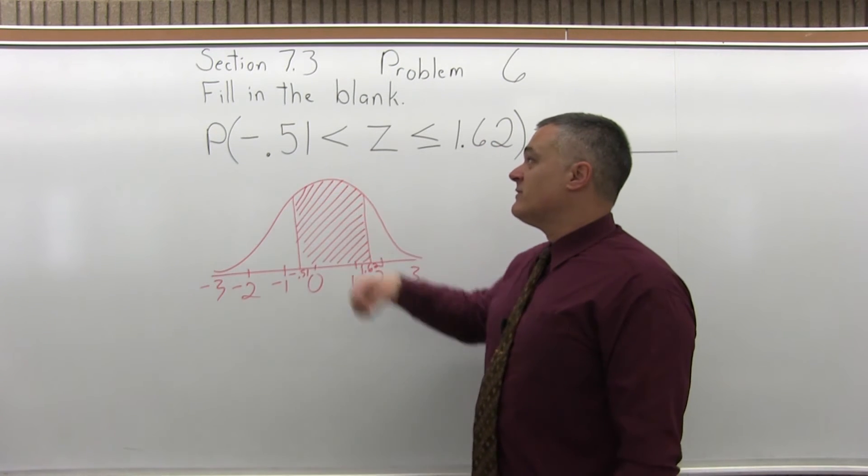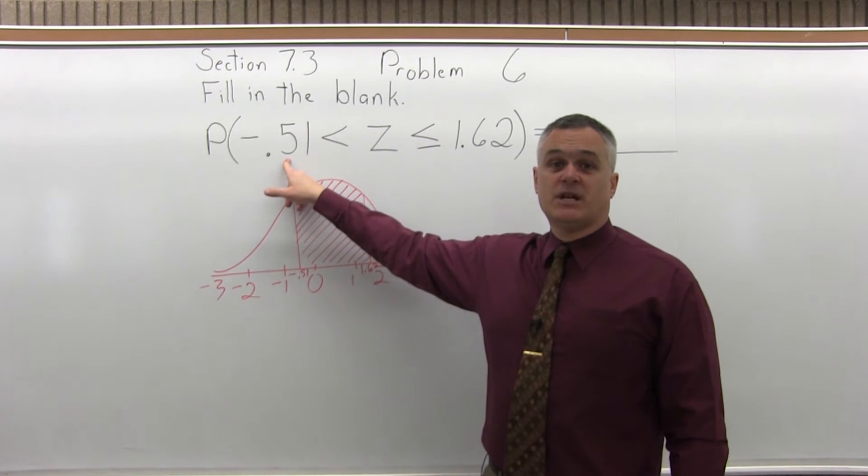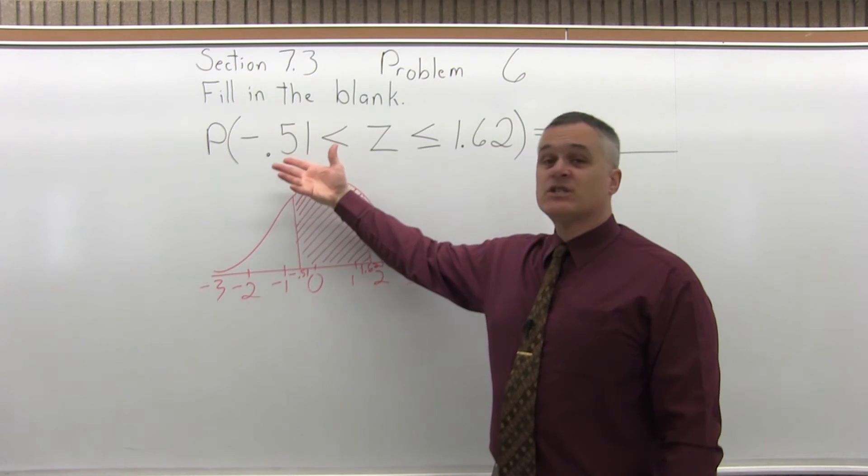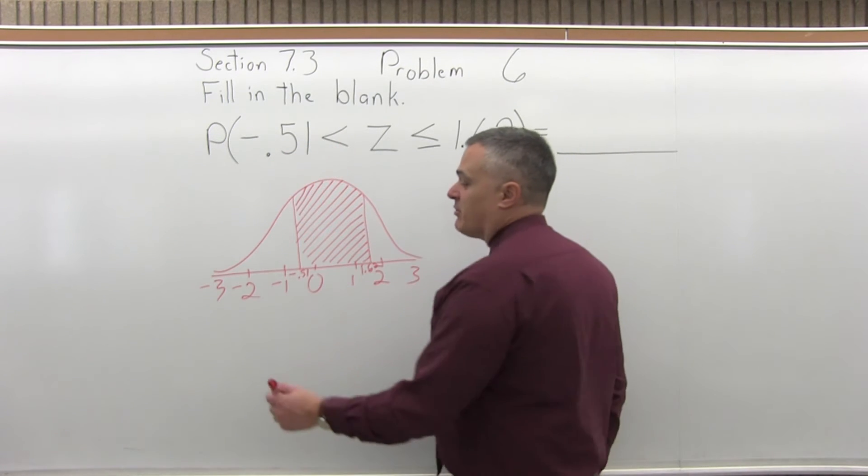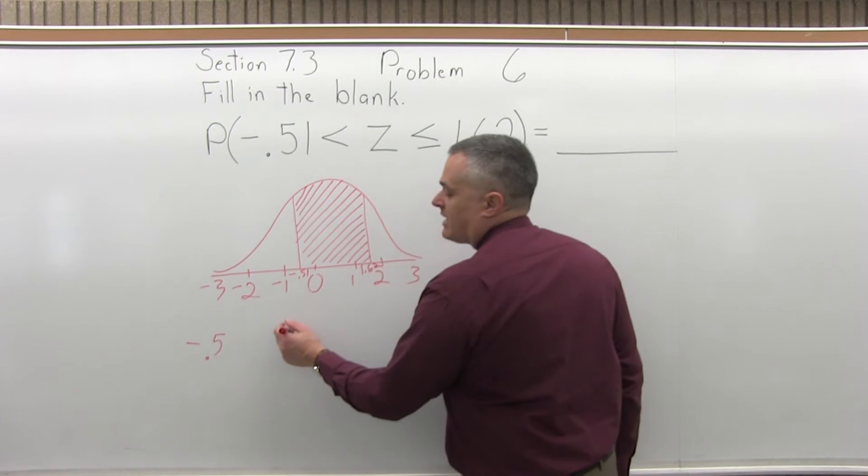So let's do the -0.51 first. What we have to do is write the number to look up so that it has two places after the decimal, which we have. Next we split the number into two parts by pulling off the rightmost digit. So we're going to have -0.5 and I'll pull off the 1.